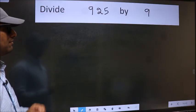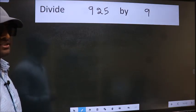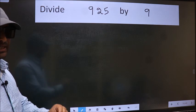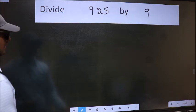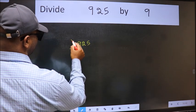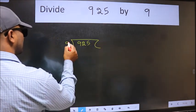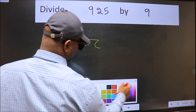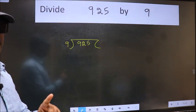Divide 9.25 by 9. To do this division, we should frame it in this way. 9.25 here and 9 here. This is your step 1.